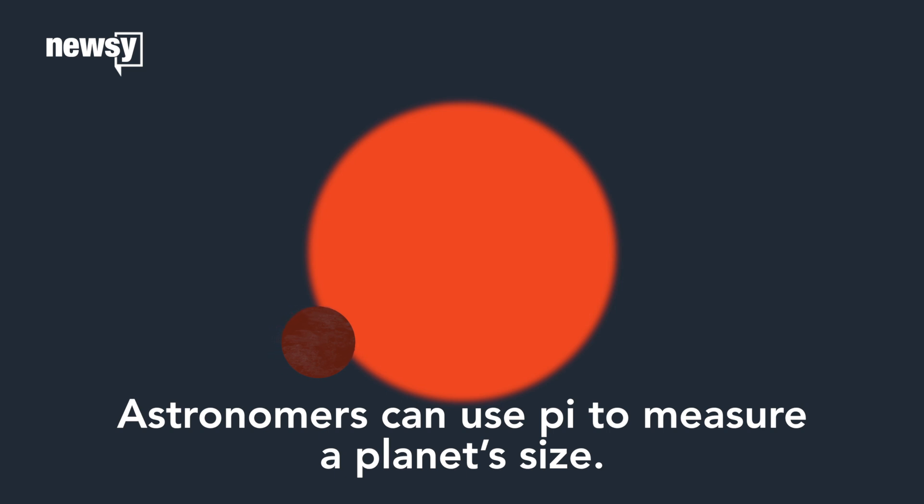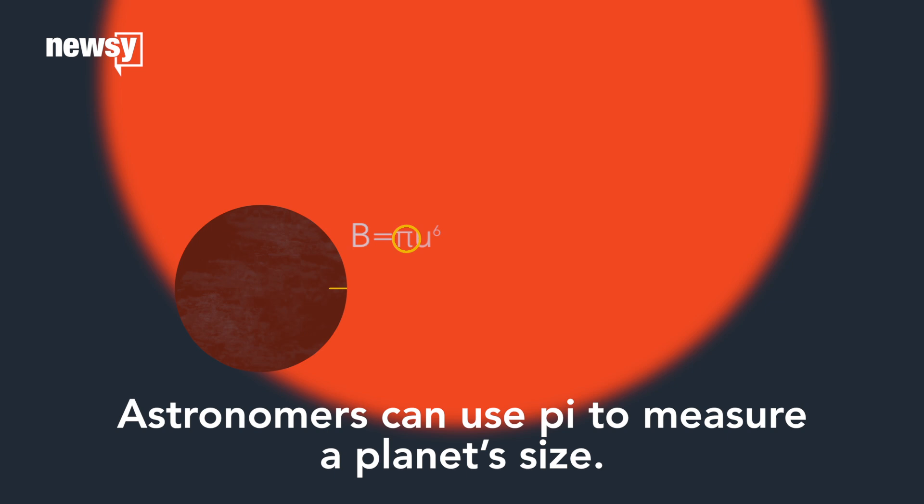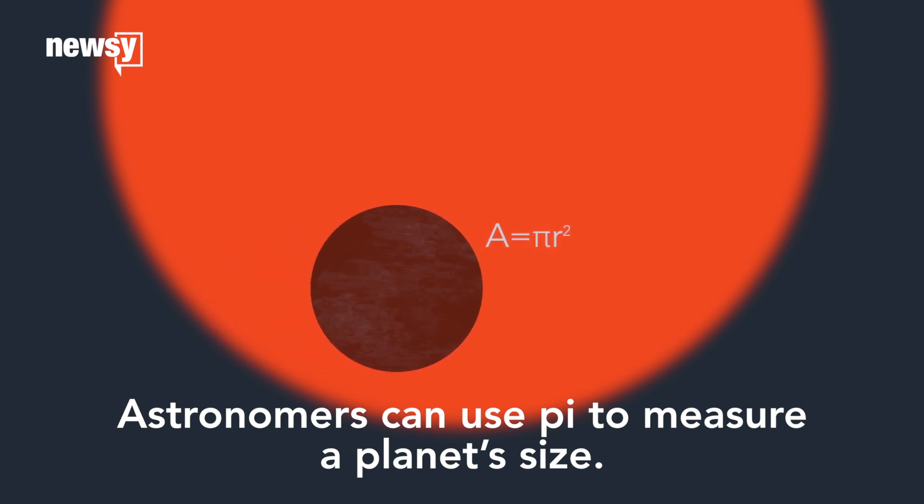Astronomers can use pi to measure a planet's size. They observe how much a star dims as a planet passes in front of it. Combine that percent with a planet's area, and you can calculate how large it is.